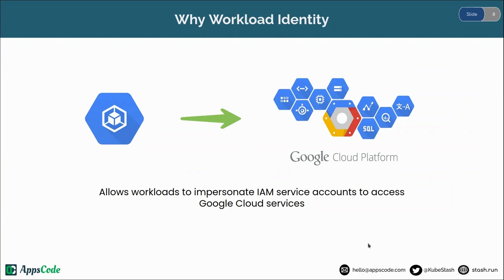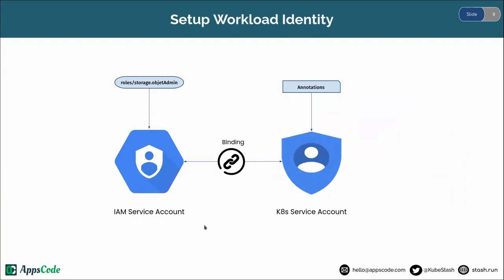To set up Workload Identity, we will need an IAM service account which will contain the necessary role — in our case it is storage.objectAdmin. This role grants full control over objects including listing, creating, viewing, and deleting objects. Then we will need a Kubernetes service account, and we have to annotate this Kubernetes service account with the email address of the IAM service account. Then we will bind this Kubernetes service account with that IAM service account, and Stash will use this service account to backup and restore data.